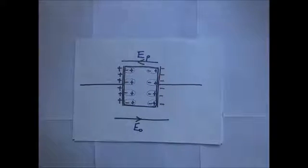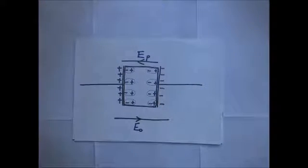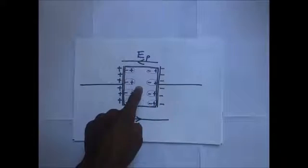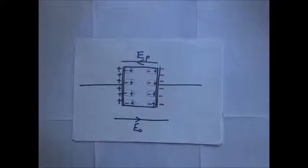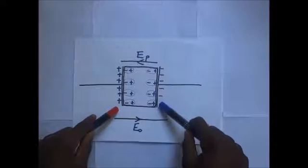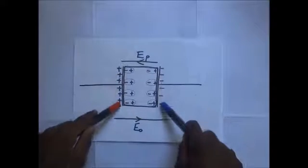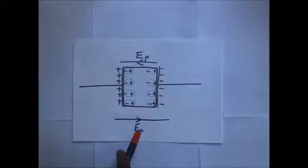This means we now have two fields. The first is the field due to the plates, and the second is a field brought about by the polarization of the dielectric — but this field due to polarization acts in the opposite direction to the field due to the plates. We know the field moves from positive to negative, so the field due to the plates E₀ moves from the positive plate toward the negative plate.